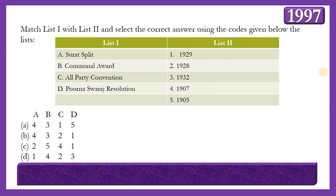Next matching question: Match events with years. List 1: Surat Split, Communal Award, All Party Convention, Purna Swaraj Resolution. List 2: 1929, 1928, 1932, 1907. The answer is 4, 3, 2, 1 — meaning the Surat Split (1907), which gave rise to moderates and extremists; the Communal Award made by British PM Ramsay MacDonald on 16th August 1932; the All Party Convention (series of conventions in 1928); and the Purna Swaraj Resolution declared by the INC under Gandhi and Jawaharlal Nehru (1929).